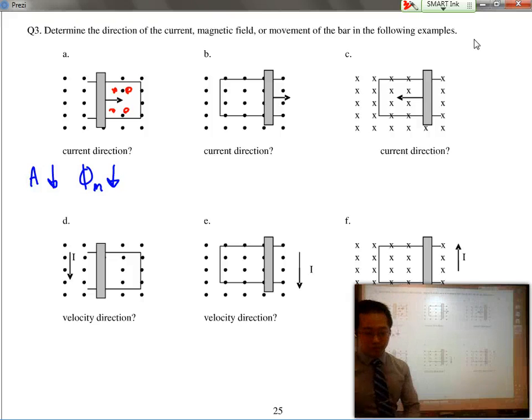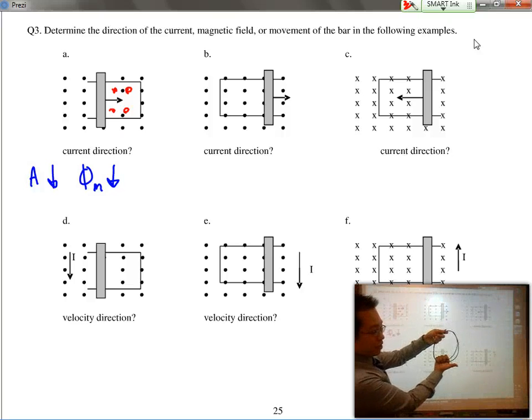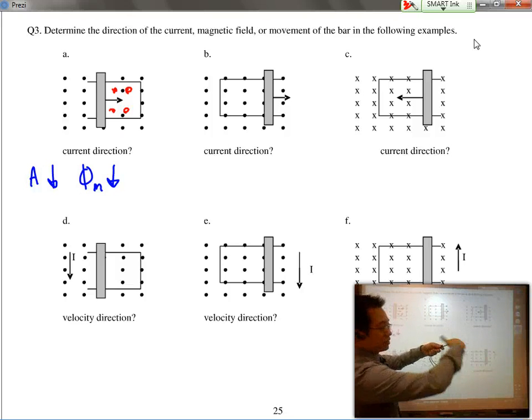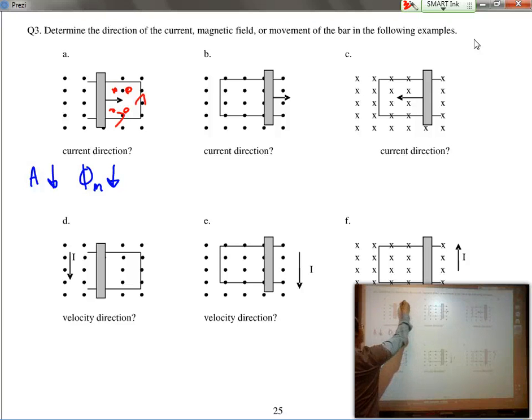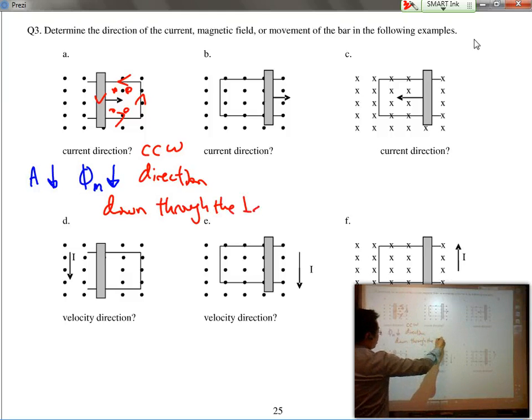So, if I use my hand rule, if I take a look at my loop, I can see that my loop is coming out of the page, which means that my thumb at the bottom is pointing to the right, which means that overall, the current is moving in a counterclockwise direction, or basically, down through the bar.